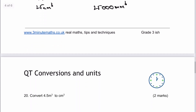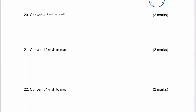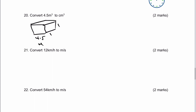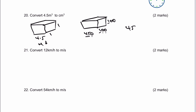We're going to have a look at question number 20. I'm going to use the same principle — here's my block. You don't have to draw a block if you don't want to, but it does help. It's 4.5 metres by 1 metre by 1 metre, all in metres cubed. If I want to change that, I'll use the same block but this time measure it in centimetres, which is going to be 450 multiplied by 100 multiplied by 100. That's going to give me a large number: 45 with five zeros afterwards, giving 4,500,000 centimetres cubed.